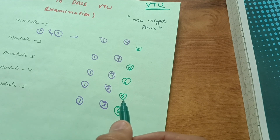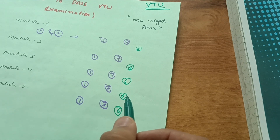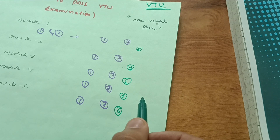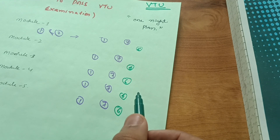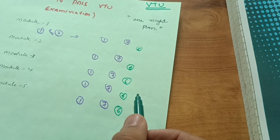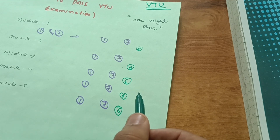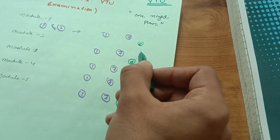It is not possible for VTU students to cover all portions otherwise, so they have to focus first on the definite questions which are most important — questions from the module question papers. Try to write them in the A4 sheet. Then figure out those questions which have least importance but are coming in the examination, carrying six marks. This trick is going to be very special for all students to pass the VTU examination.